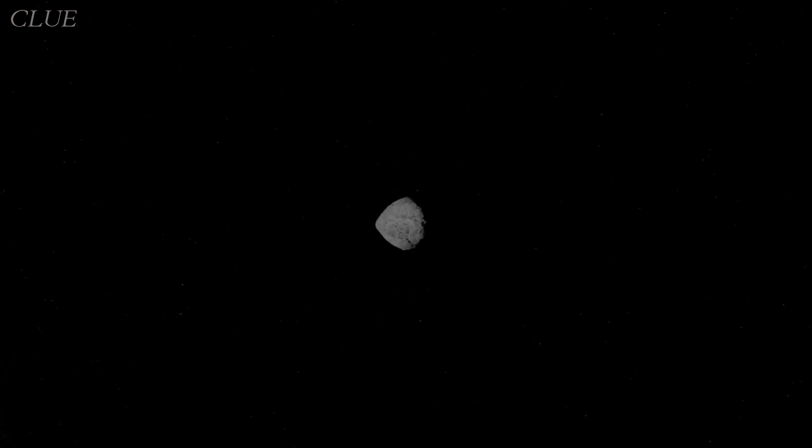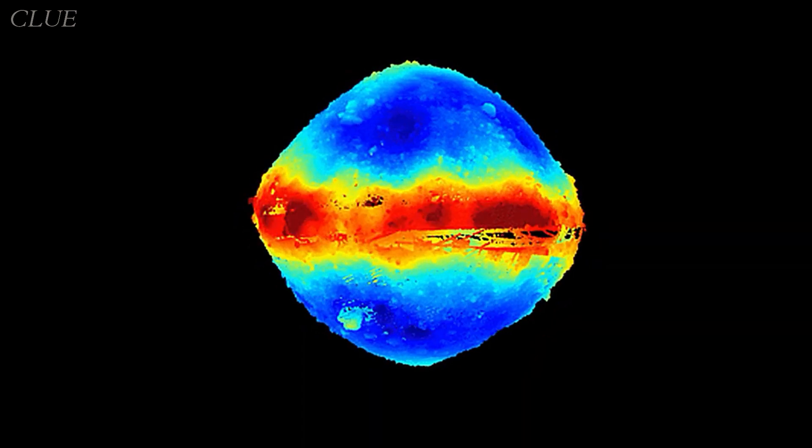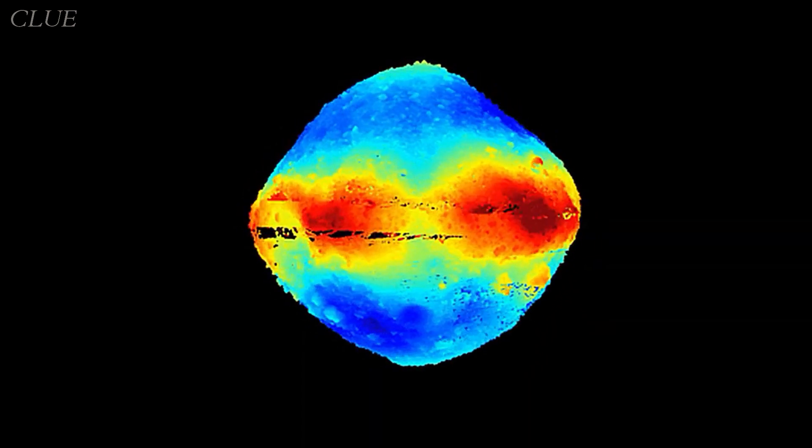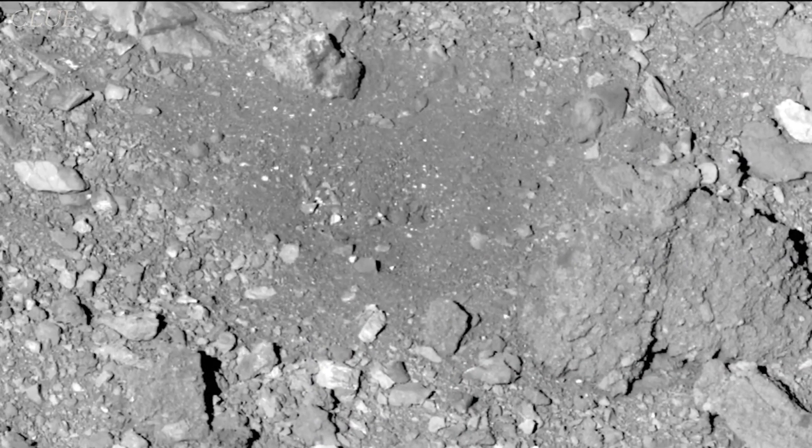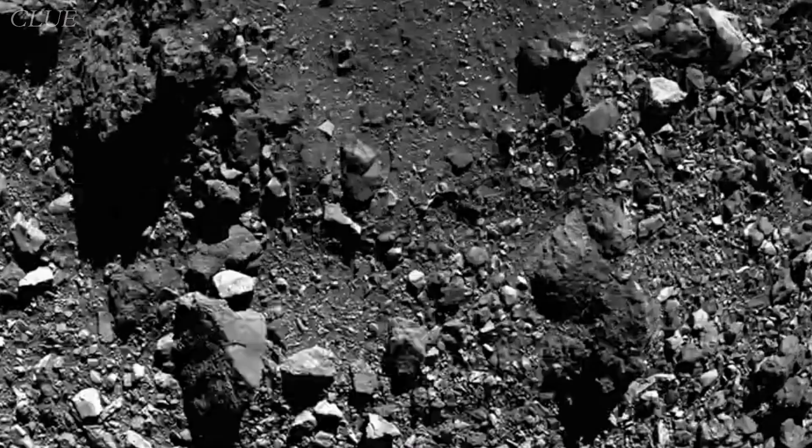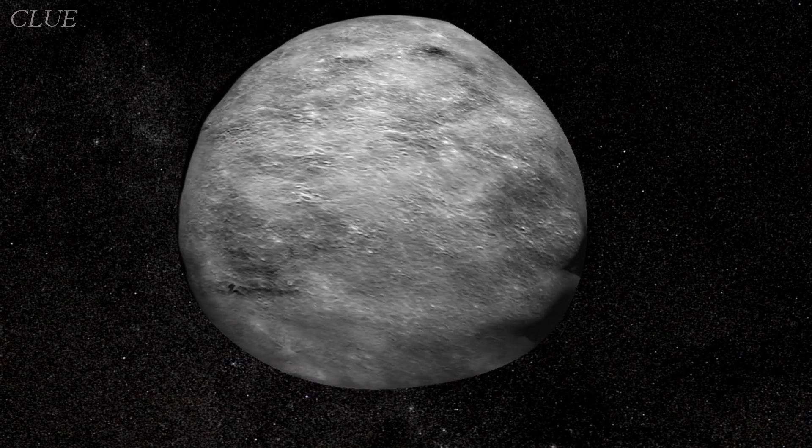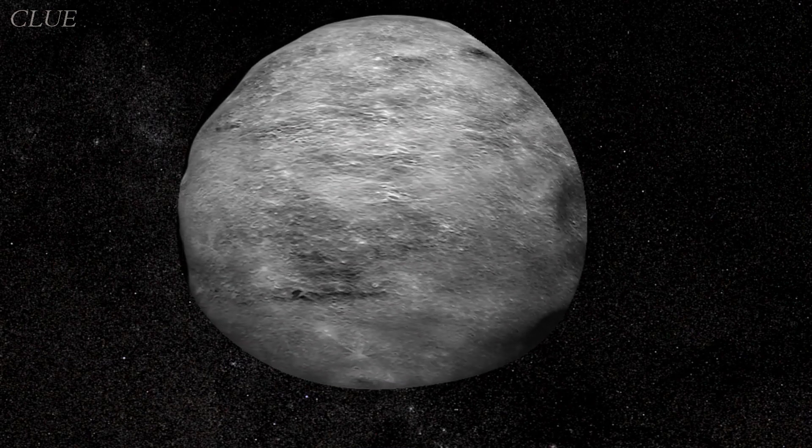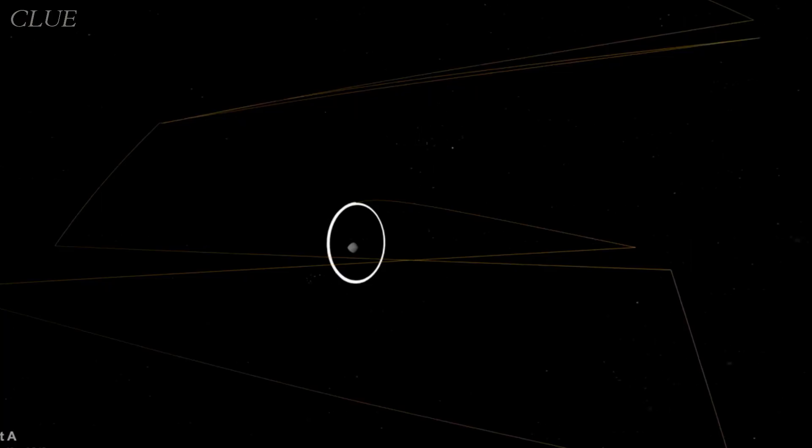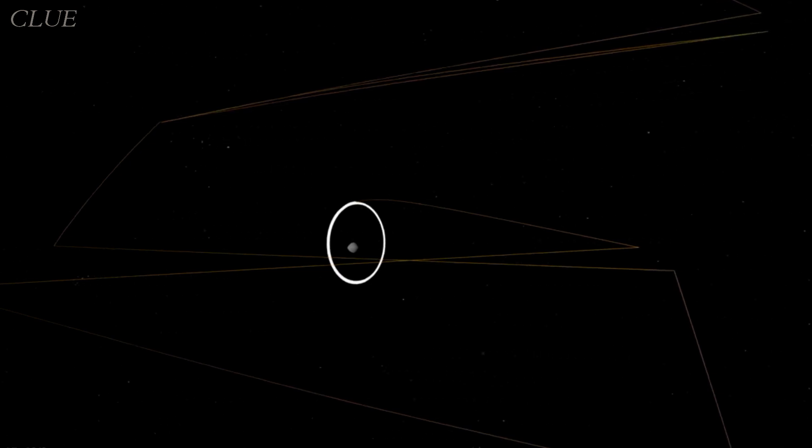The spacecraft got closer to the asteroid performing flybys of Bennu's surface, approaching as close as 6.5 kilometers to explore Bennu's contours and track its orbital path. As OSIRIS-REx circled ever closer, it revealed a surprising find: hints of hydrated minerals, particles, specifically in the form of clay, gracing Bennu's surface.